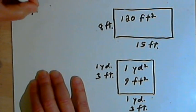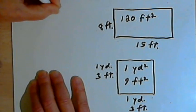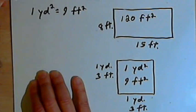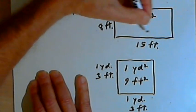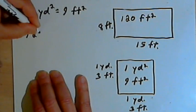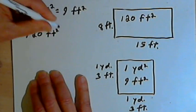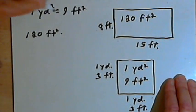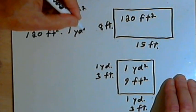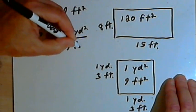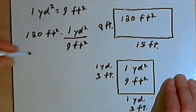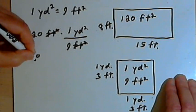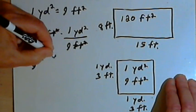So now I can write the equation: 1 square yard equals 9 square feet. I'll take the 120 square feet I have for this rectangle and multiply it by 1, written as the fraction 1 square yard over 9 square feet. I can cancel out the square feet and I'm going to have 120 over 9 square yards.